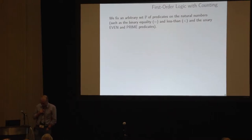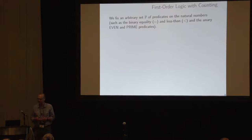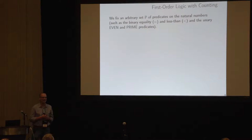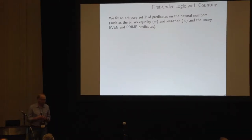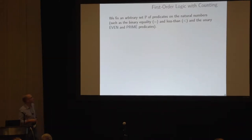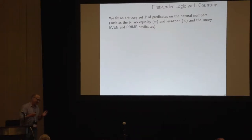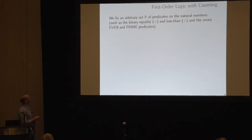First-order logic with counting, in various variations, has been around for a long time. We use one formalization here due to Nicole Schweikart and Dietrich Kuske, which I like, and its expressiveness is somewhere in the middle of all the variants considered. It goes as follows: we fix a set of predicates on the natural numbers.